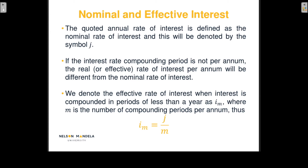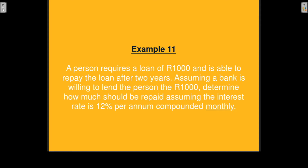It's easier to understand this if we do a few examples. Example 11 is a repetition of an example you are familiar with — we did this in example one and example seven. A person requires a loan of a thousand rands and is able to repay the loan after two years. Assuming a bank is willing to lend the person a thousand rands, determine how much should be repaid, assuming the interest rate is 12% per annum compounded monthly. This example now differs from example seven in that the compounding period is not per annum but per month.